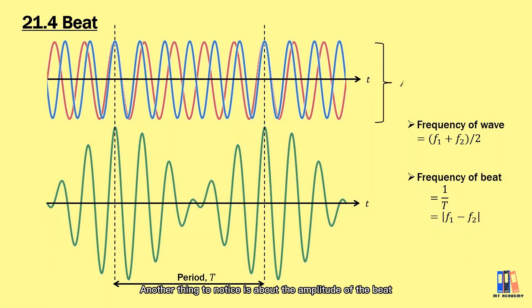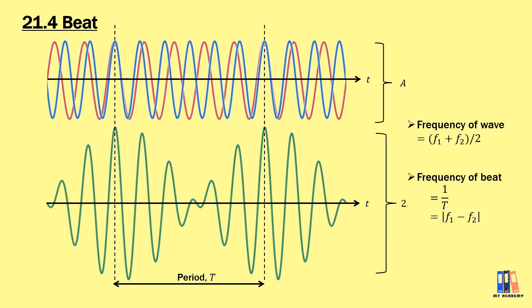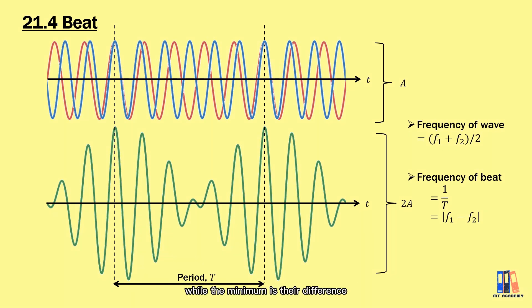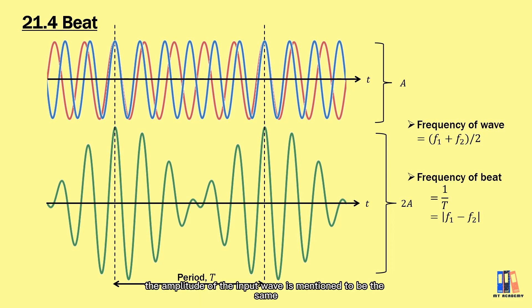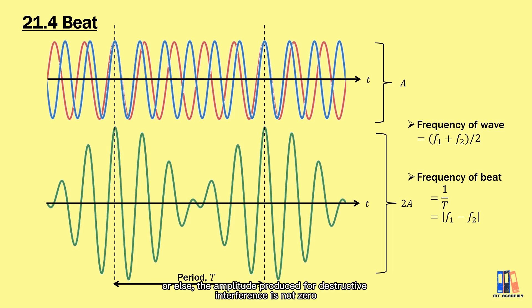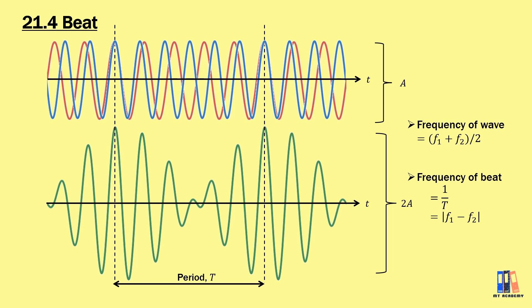Another thing to notice is the amplitude of the beat. The maximum amplitude is the sum of the amplitudes of the two input waves, while the minimum is their difference. This is why the amplitude of the input waves should be the same or only slightly different — otherwise, the amplitude produced during destructive interference is not zero and the beat cannot be detected clearly.